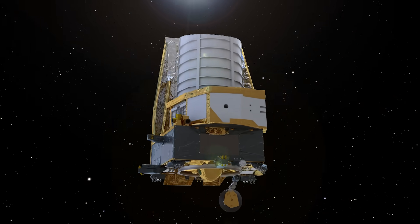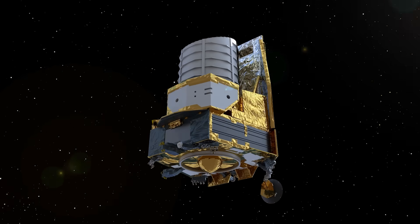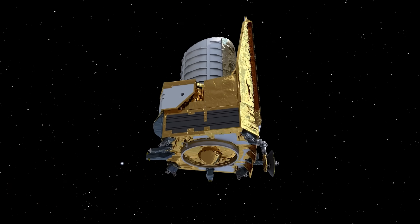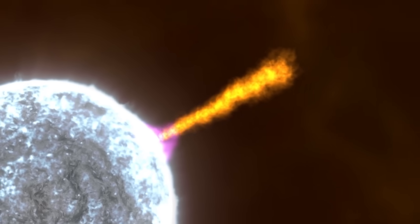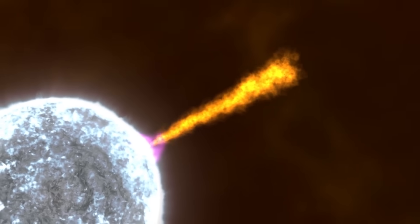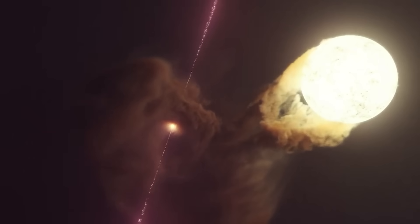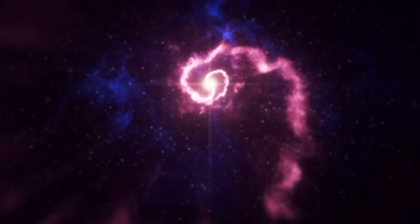Although Euclid wasn't specifically designed to study transient events, it has already proven its versatility by detecting supernovae, gamma-ray bursts, and even quasars—objects that flash, flare, or shine with immense energy across the cosmos.